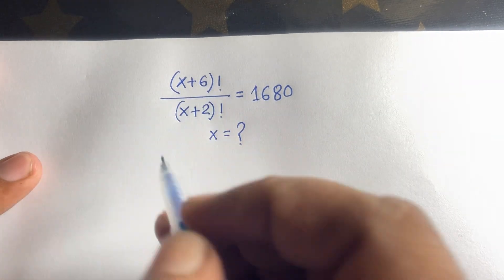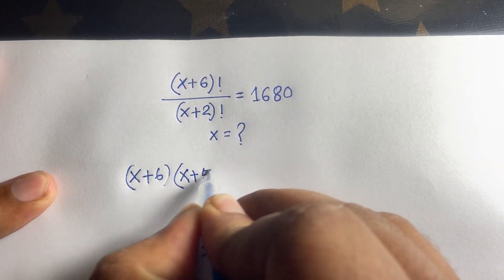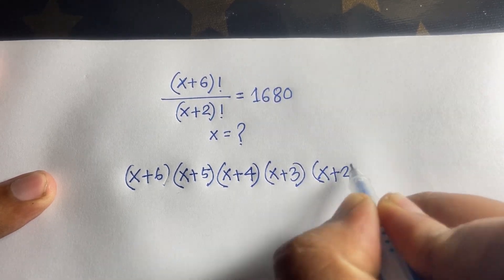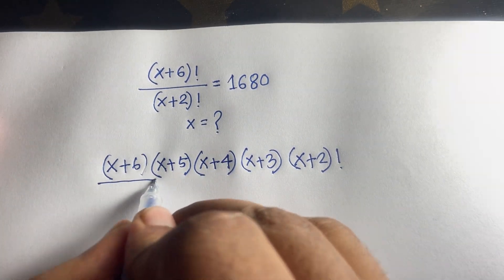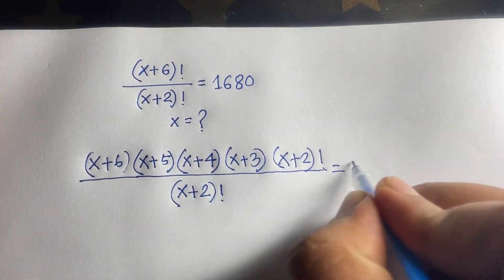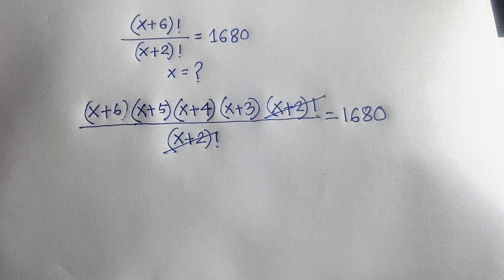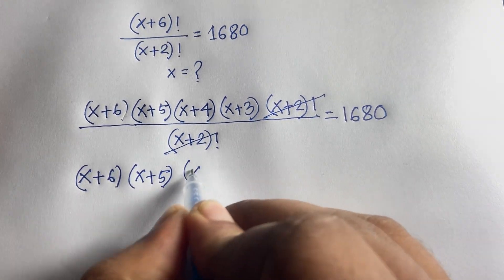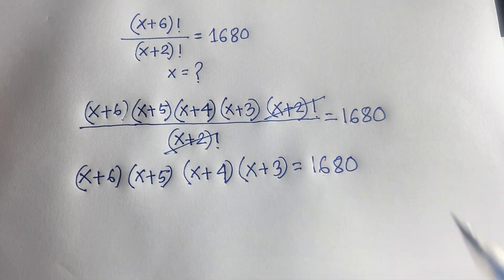We can expand (x+6)! as (x+6)(x+5)(x+4)(x+3)(x+2)!. Since (x+2)! appears in both numerator and denominator, they cancel, leaving (x+6)(x+5)(x+4)(x+3) = 1680.